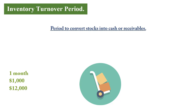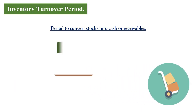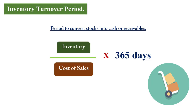However, if it takes two months to sell the inventory, you can only raise revenue six times in a year, meaning you get only $6,000. The formula for the inventory turnover period is: inventory (from the current assets section of the balance sheet) divided by cost of sales (from the P&L), multiplied by 365 days.